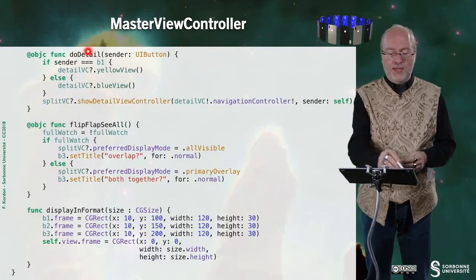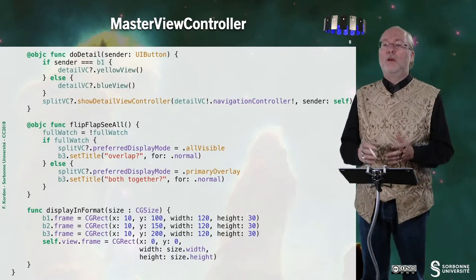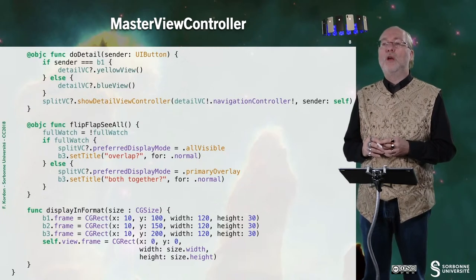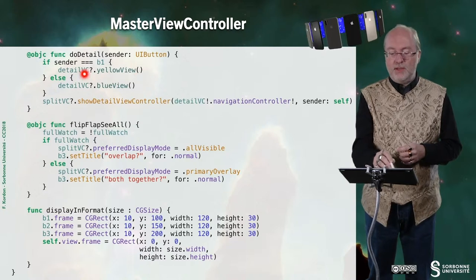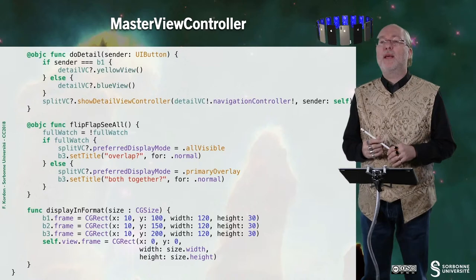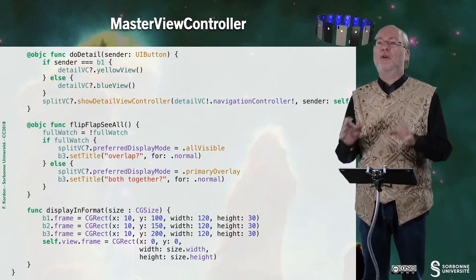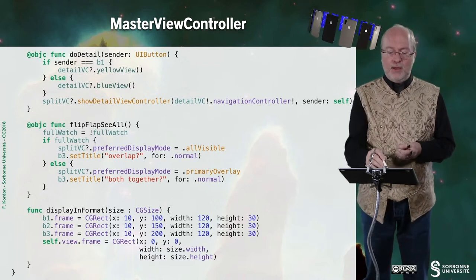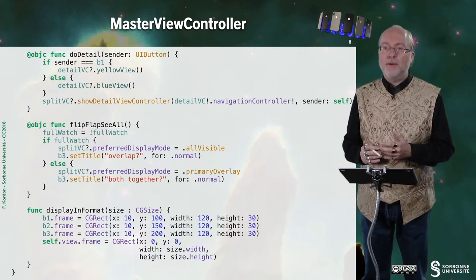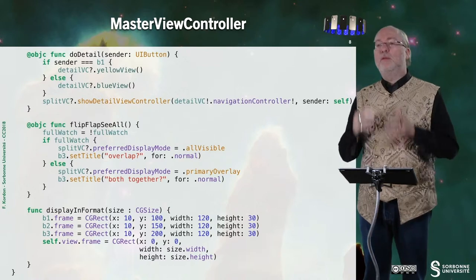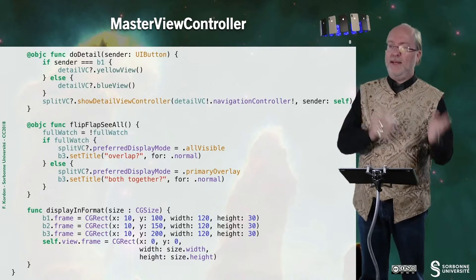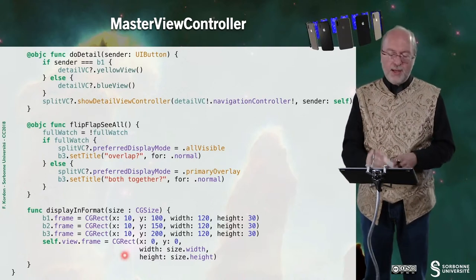This method allows me to display a detail view — very simple. I request to display a yellow view or blue view depending on which button is pressed. The third button is associated to a method that does a flip-flop, switching between all-visible and primary overlay, so I can show or hide it. And here you have the displayInFormat method that can be called by viewWillTransition(to:with:).